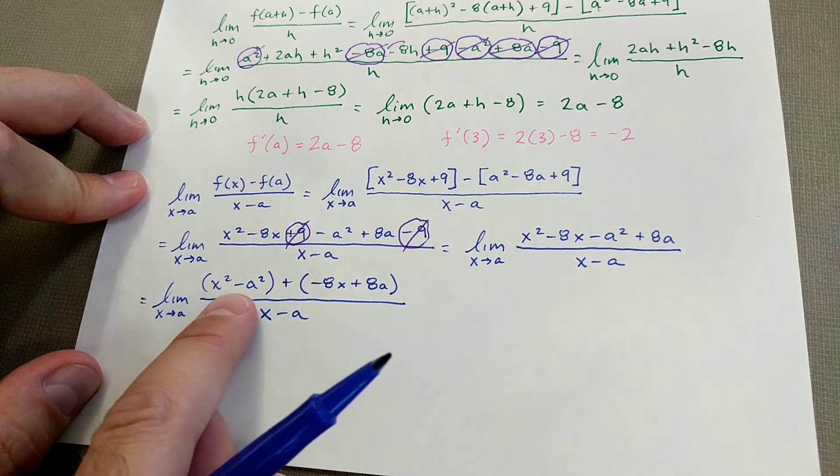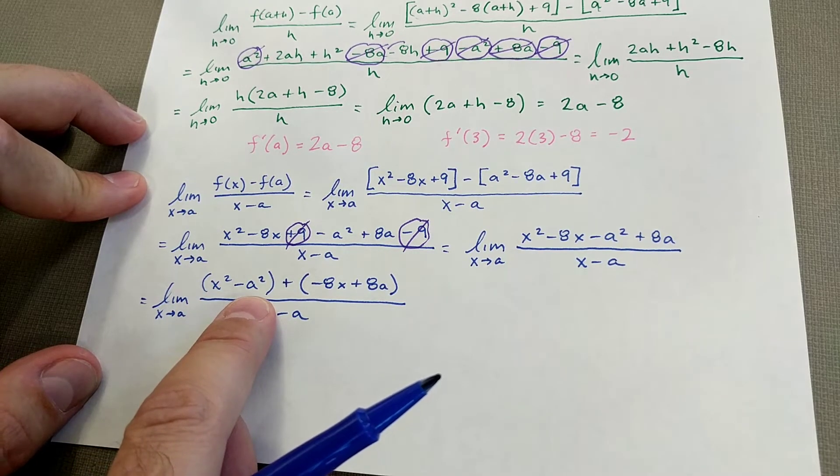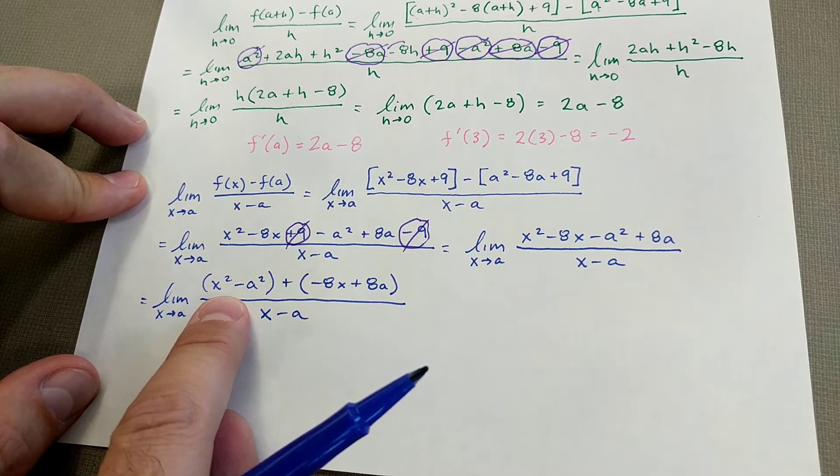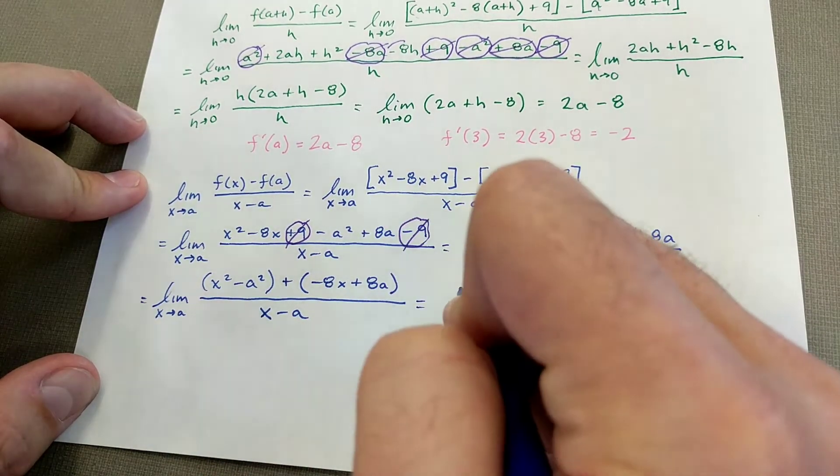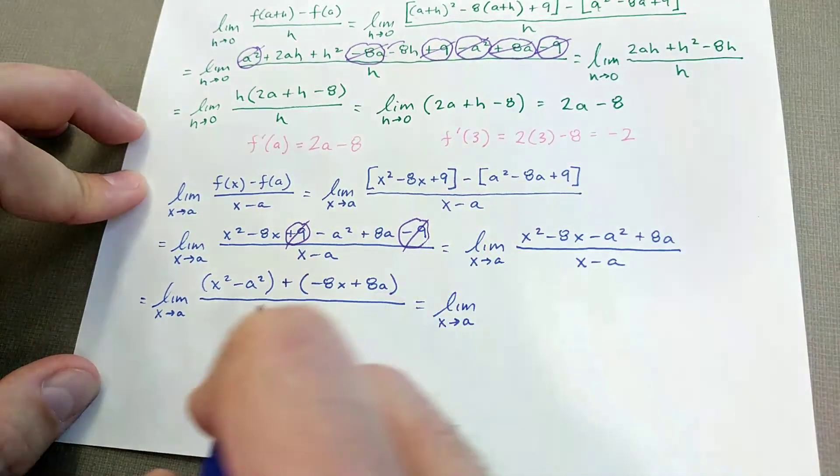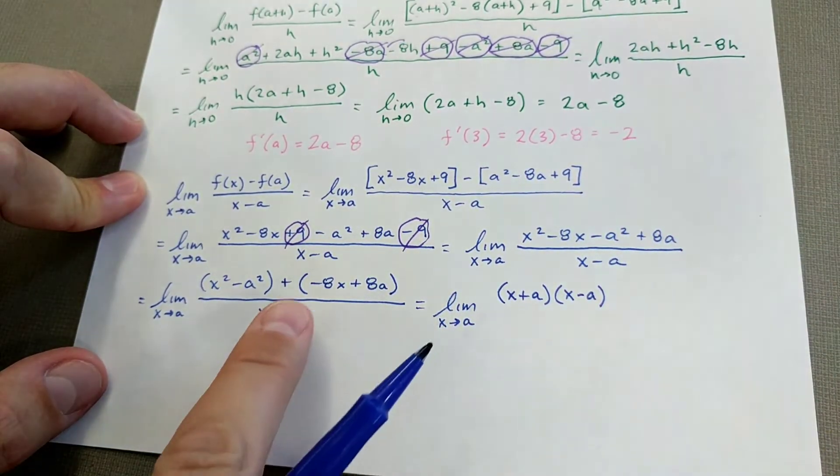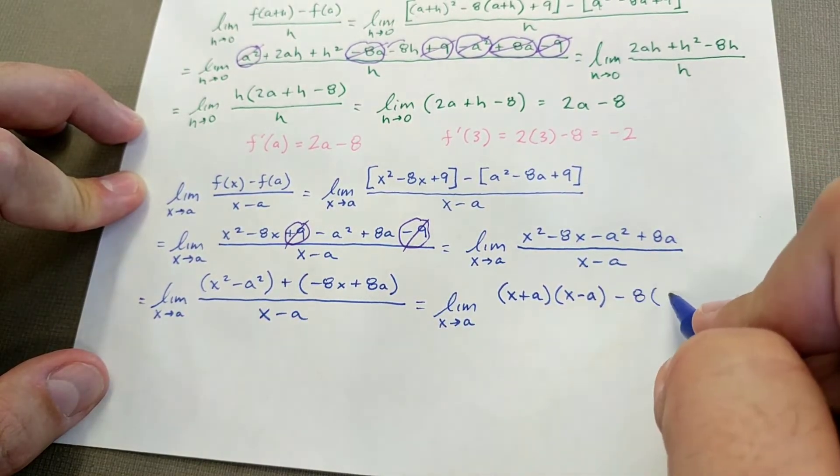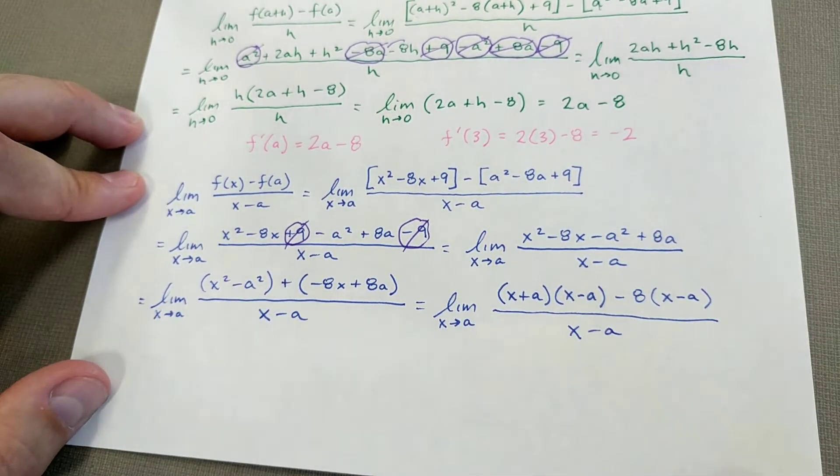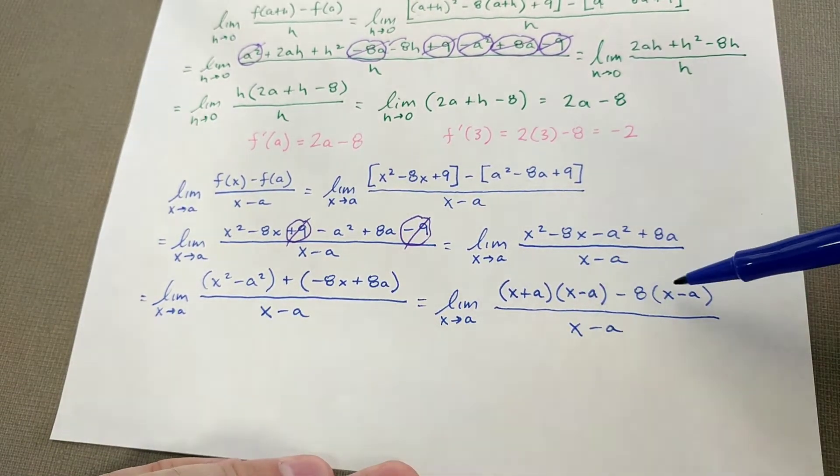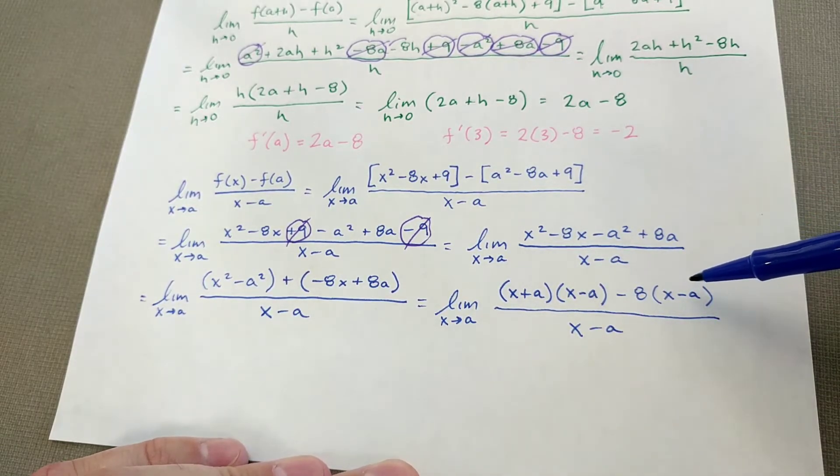So that can factor right there. That is just a difference of squares. If you're not good at recognizing those things, then get some practice on it. You can Google difference of squares practice and find a bajillion problems. And that one has a common factor of negative 8 that I can factor out. So let's see what happens when I do my factoring here. So as X approaches A, so this will be X plus A times X minus A. And then if I factor out negative 8 here, I get X minus A all over X minus A.